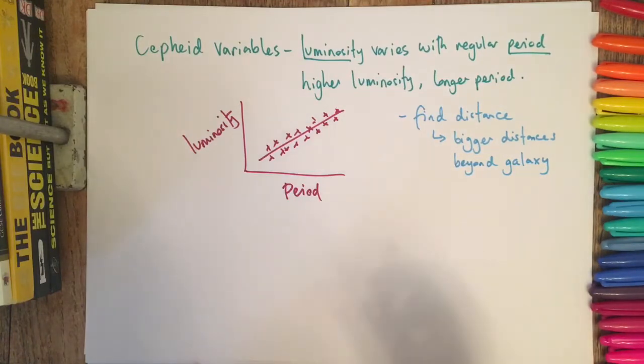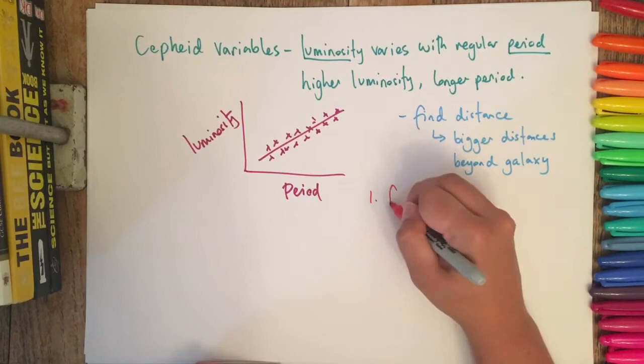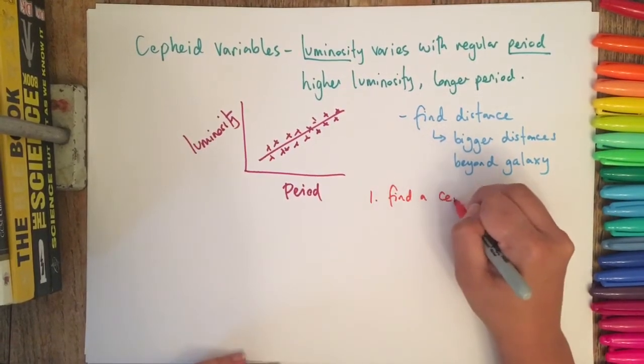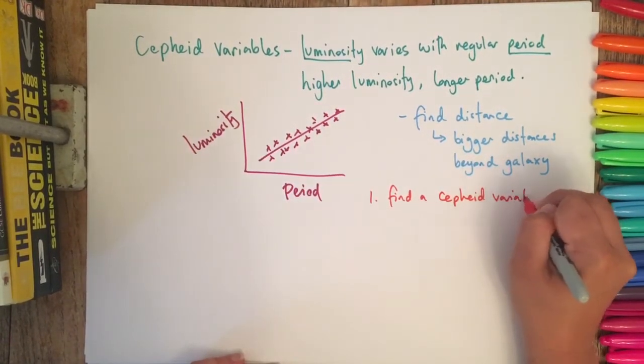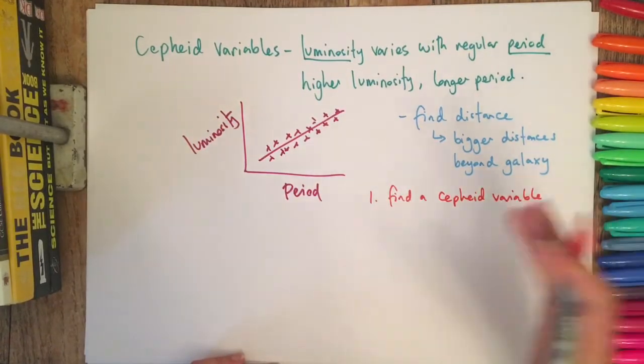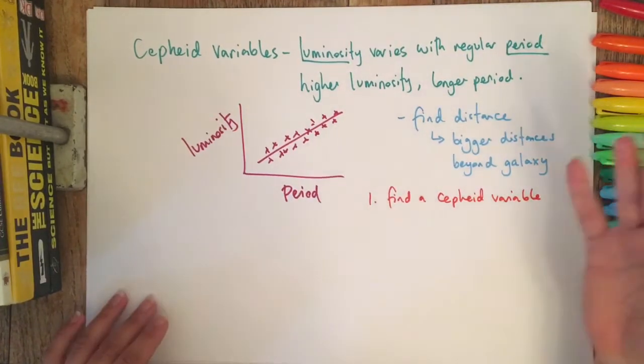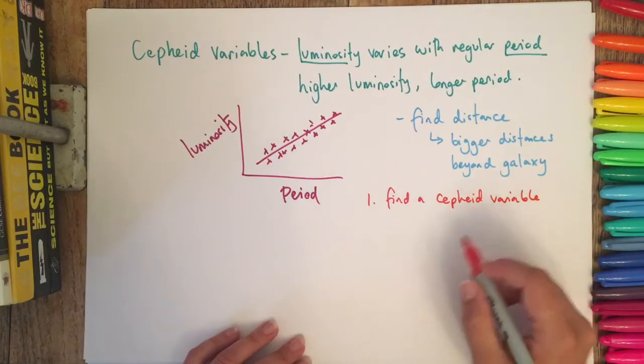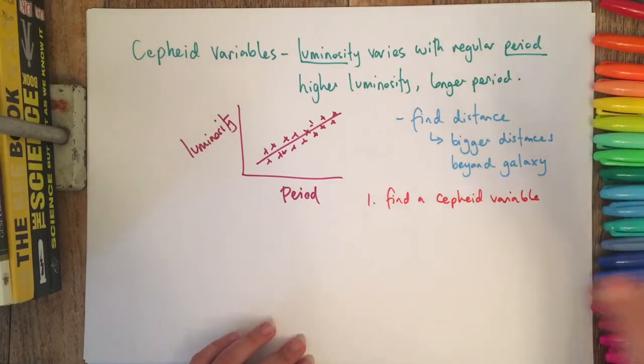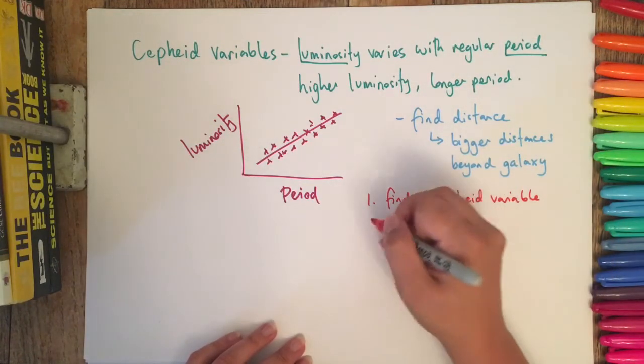You need to know step by step how this is done. Number one: find a Cepheid variable. This could be in a galaxy that you're looking at or a cluster of stars. Find a Cepheid variable that's in the area that you want to look at and measure.